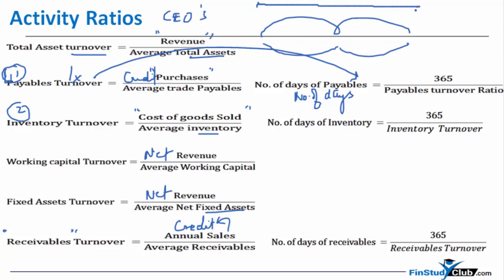Imagine this is one full year and there is something that completes two full cycles within that year — so the duration of one cycle is simply six months. That something I am talking about is nothing but CFA Level 1. If someone asked how many cycles CFA Level 1 has within a year, that is asking about the turnover. But if the same question is asked in number of days, you simply take 365 days — or 12 months — and divide by the turnover of two, giving you six months.